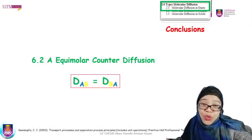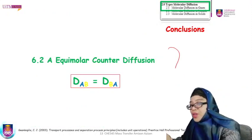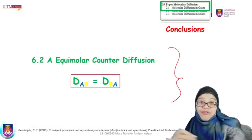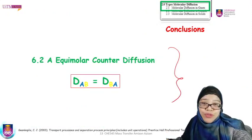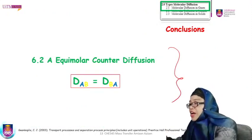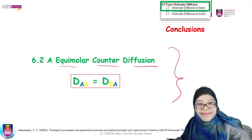This slide shows the final conclusion for equimolar counter diffusion: the diffusivity of A through B is equivalent to the diffusivity of B through A.